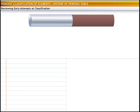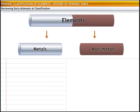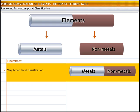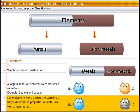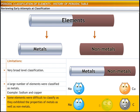The earliest classification categorized elements into metals and non-metals. However, this classification served only limited purpose. The classification was at a very broad level. A large number of elements were classified as metals, but they did not necessarily display similar chemical properties. For example, sodium and copper were both characterized as metals, but their chemical properties are very different. Some elements such as boron exhibited the properties of both metals as well as non-metals, making it difficult to classify such elements.